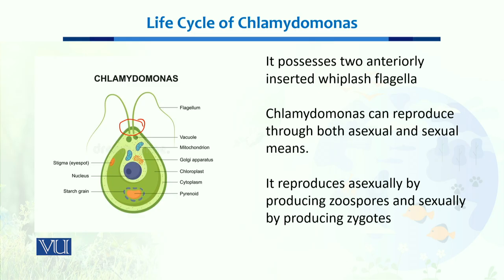When we talk about reproduction, Chlamydomonas can reproduce both sexually and asexually. It produces zoospores when it reproduces asexually, and it produces a zygote when it reproduces sexually.